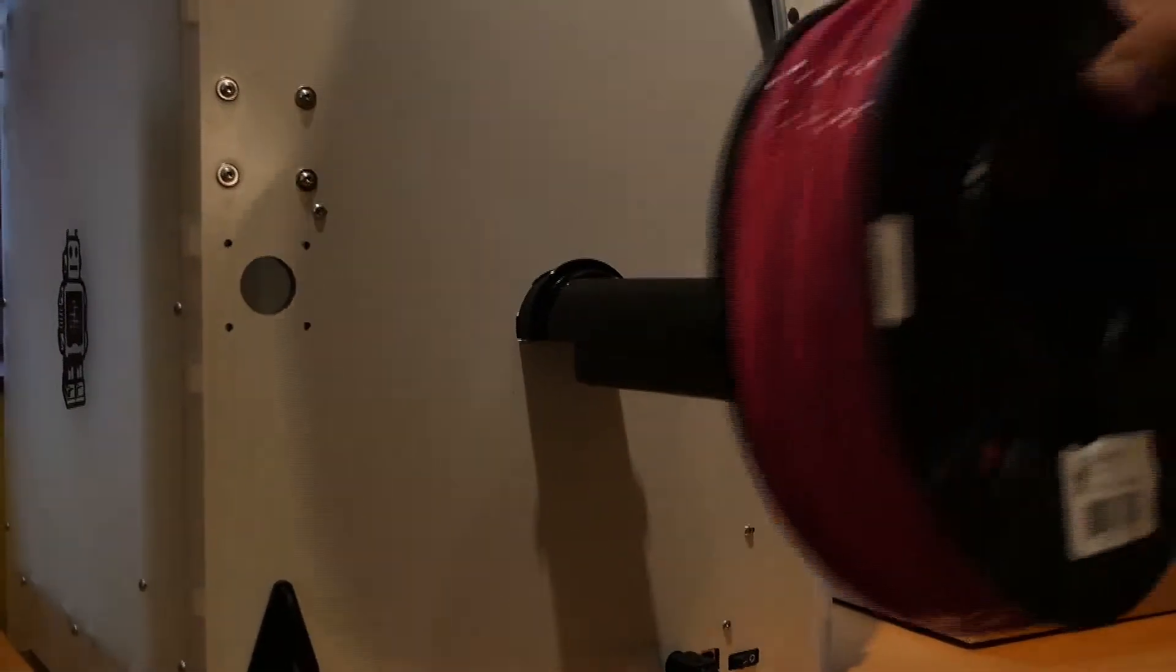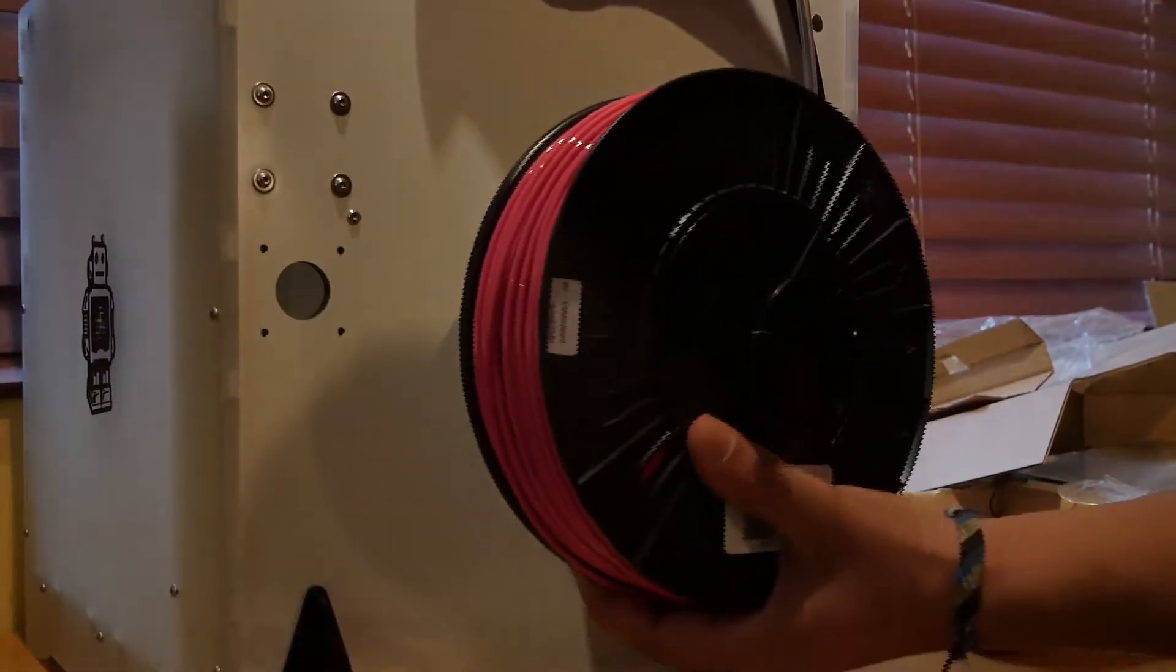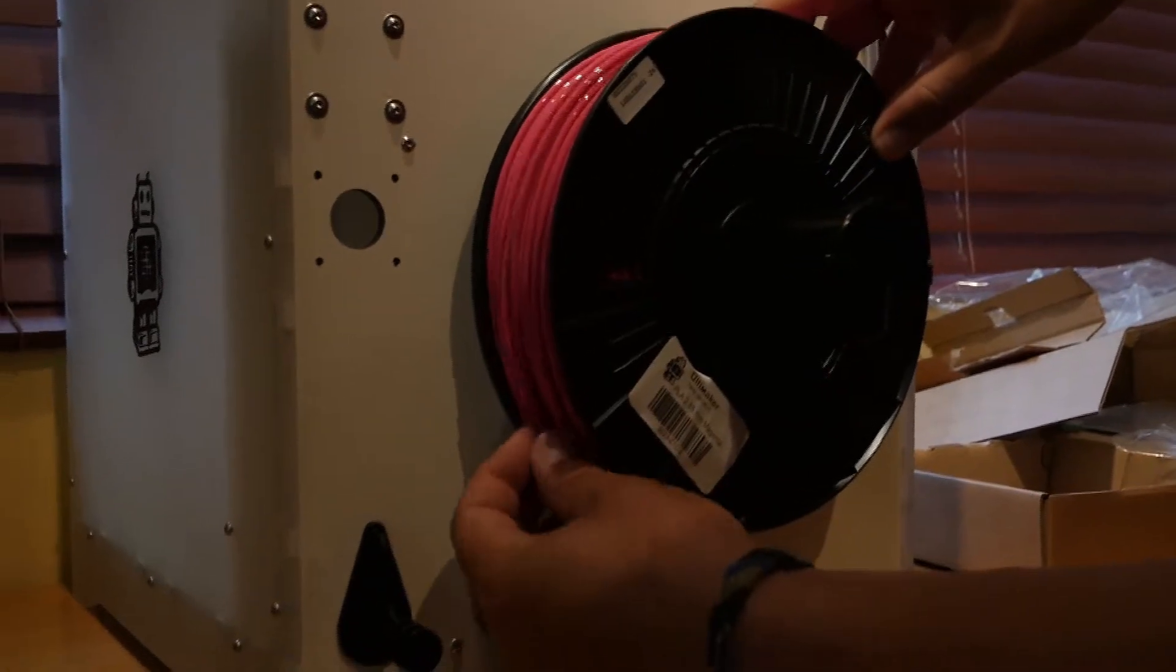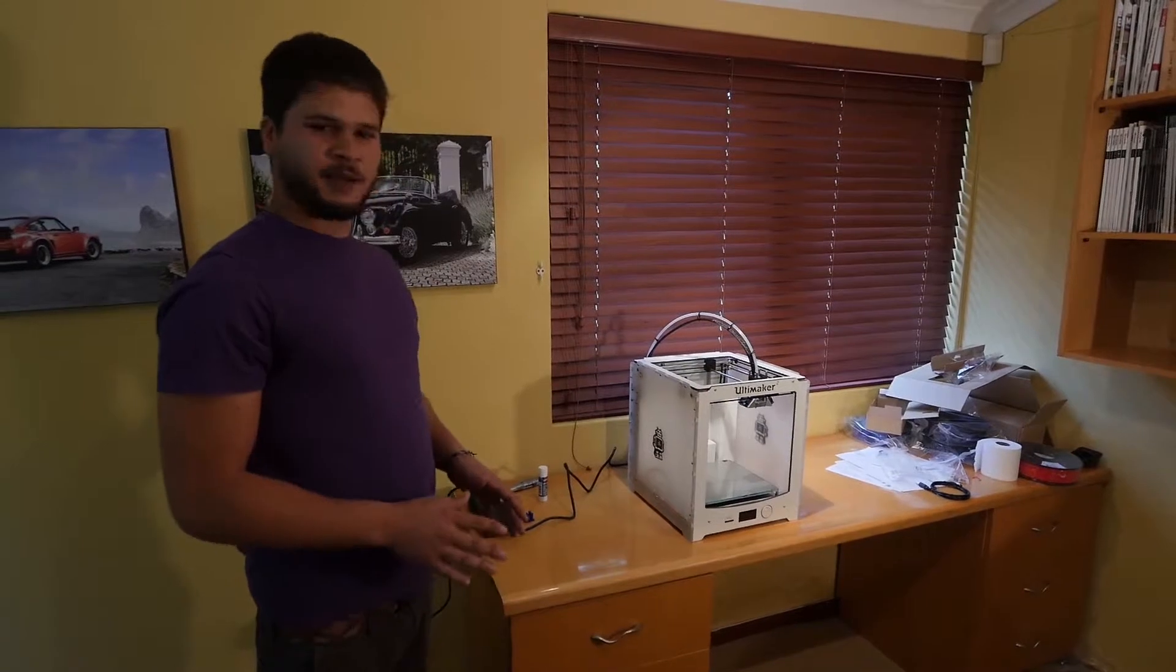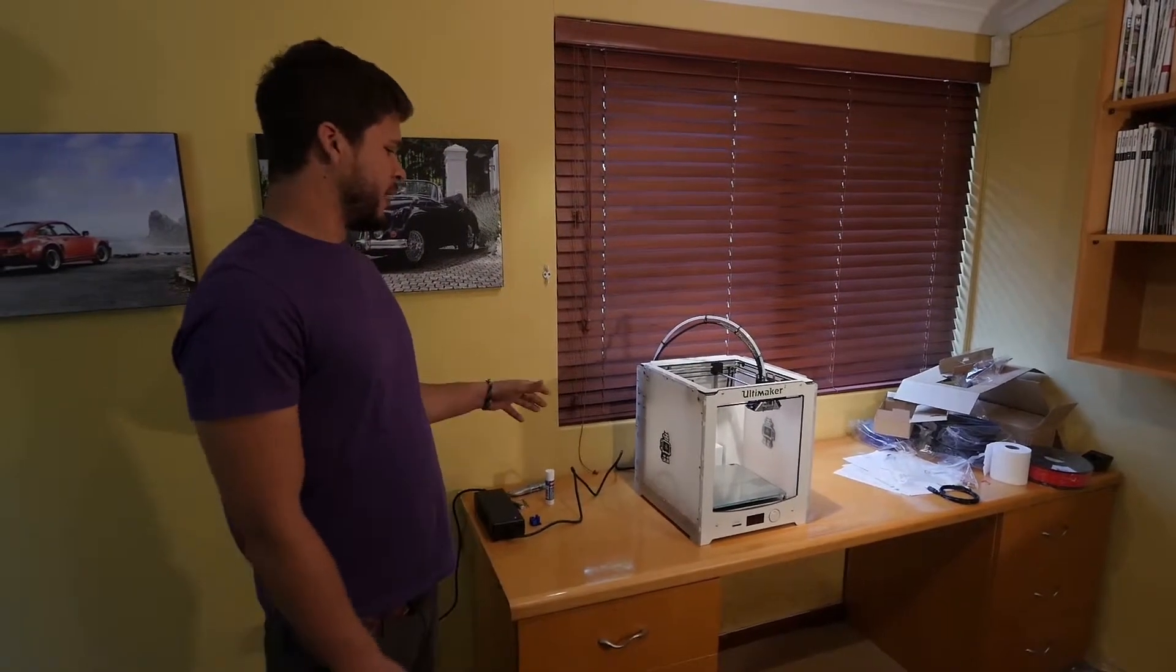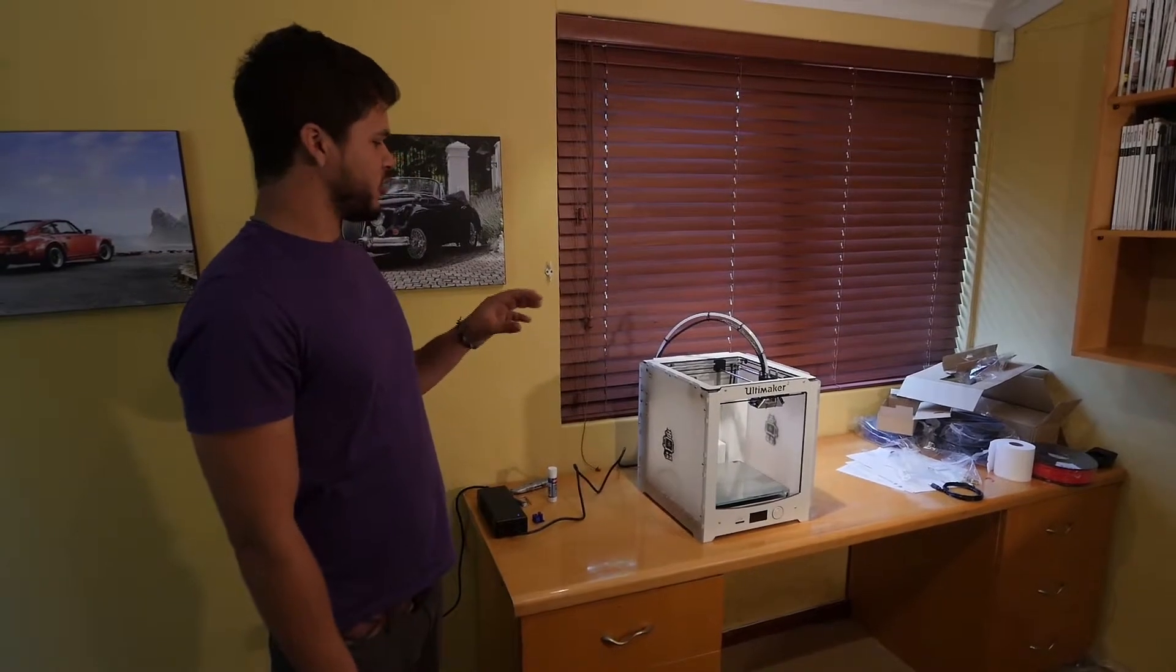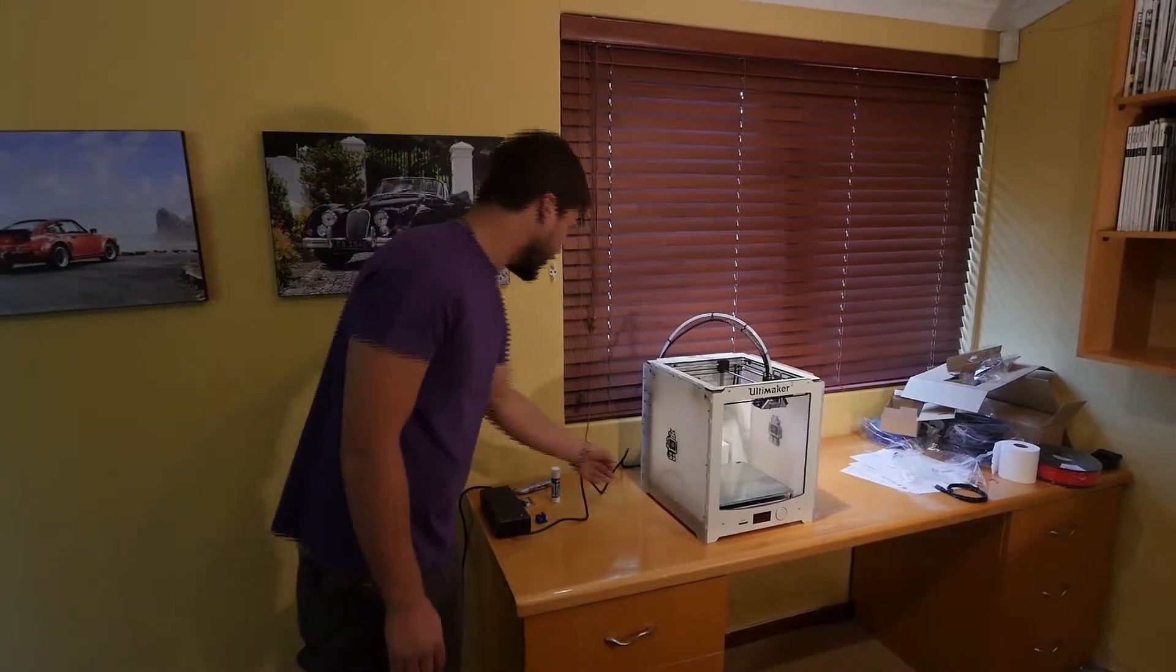So we are just going to put on our spool of the Ultimaker Magenta here. It just slides on quite simply like that. And then we are almost ready to rock. So it looks like we are almost ready to go. The power supply is in. We double checked everything to make sure it's all right and everything is assembled. So it looks like we can switch on and start printing now.